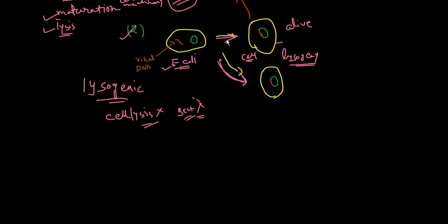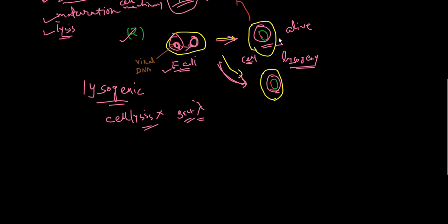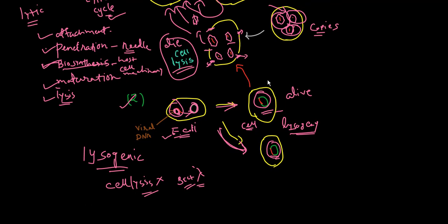When bacteriophage lambda penetrates E. coli, its DNA forms a circle. This circular DNA recombines with the circular DNA of the bacteria and integrates into it — this integrated bacteriophage DNA is called a prophage. Every time the host bacterium replicates normally, the prophage DNA replicates along with it.